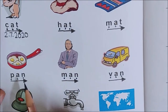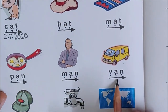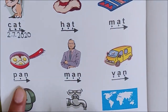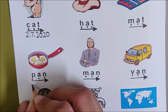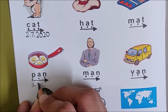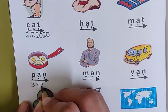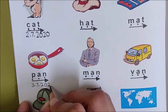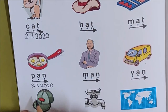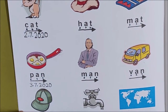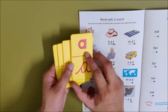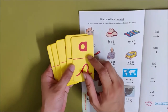So children, today we did reading of the words pan, man, and van. Below the word pan, write down the date. Today is July 3, so write the date 3.7.2020. Write the numbers small. Okay children, now time for the next activity. Take out five flashcards from your alphabet kit.